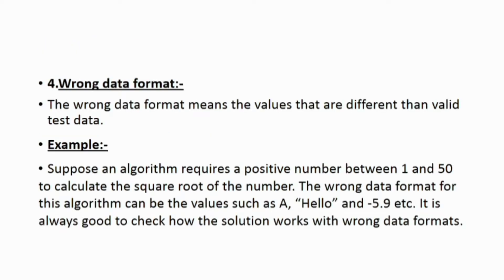Wrong data format means values that are different in type from the valid test data. For example, if an algorithm requires a positive number between 1 and 50 to calculate the square root of the number, wrong data format examples would be values such as capital A, 'hello', and -5.9. It is always good to check how the solution works with wrong data formats.